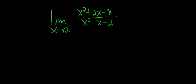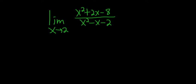Find the limit as x approaches 2 of this quantity. If we plug in 2 for all the x's, you'll notice that on the bottom we get 4 minus 2 minus 2. So we get 4 minus 4, which is 0.